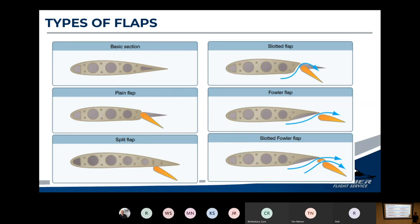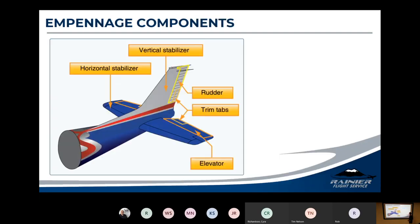There are all kinds of different designs for wing flaps that are more or less optimal depending on what the airplane is trying to do. They're just movable sections on the back of the wings. When we talk about the empennage, it helps guide the fuselage and control the movement of pitch and yaw.